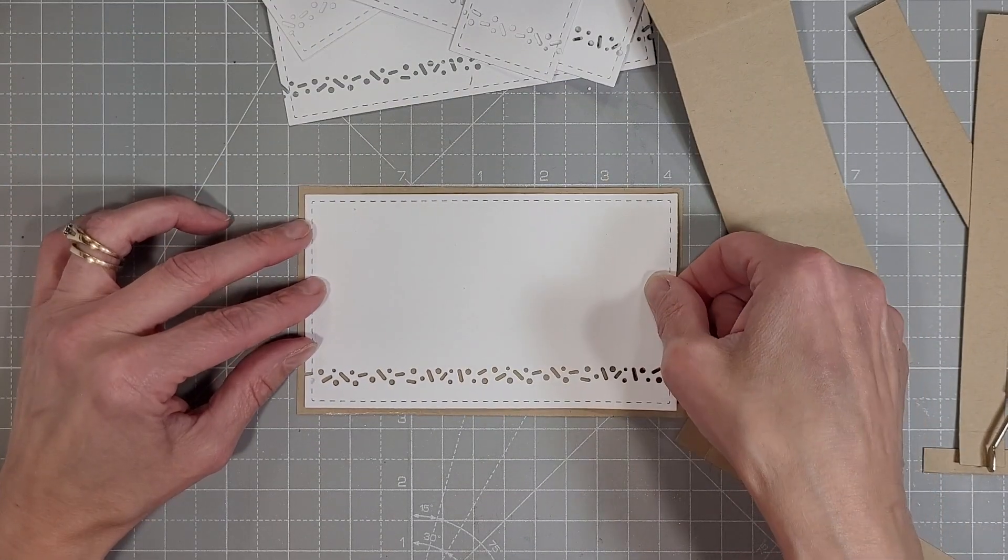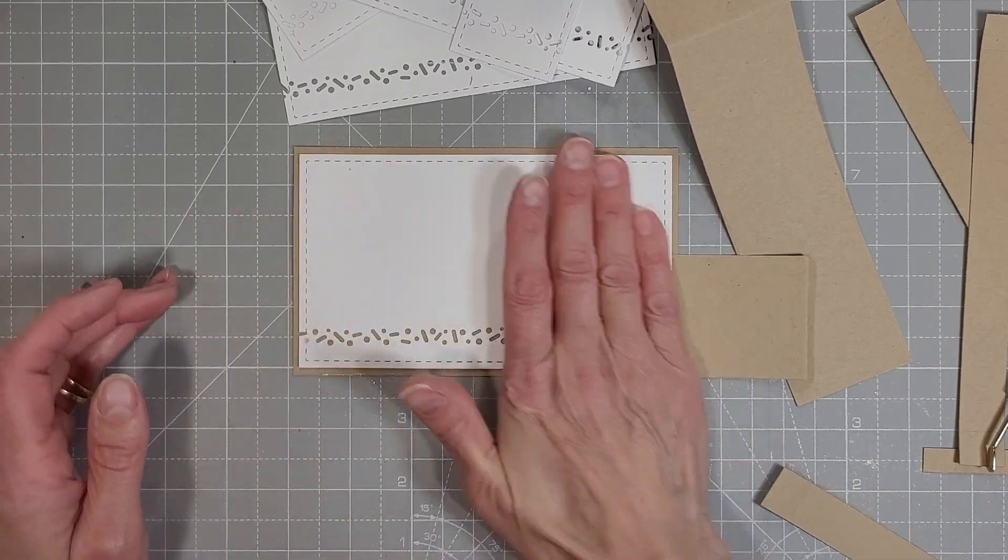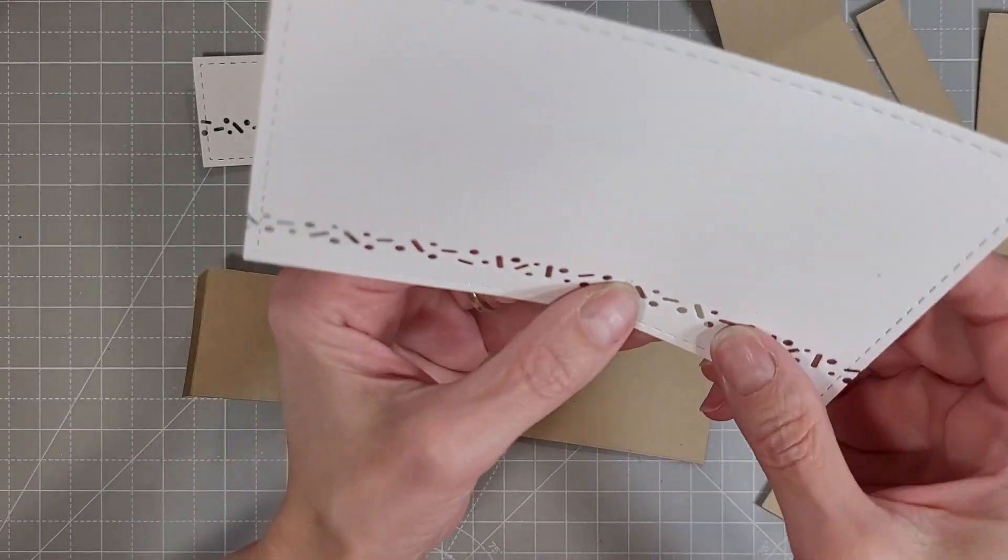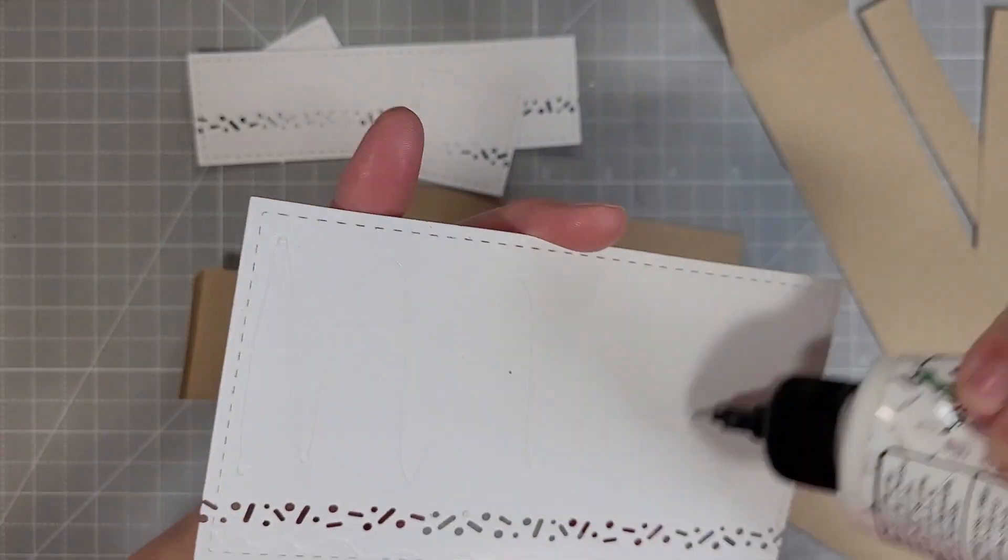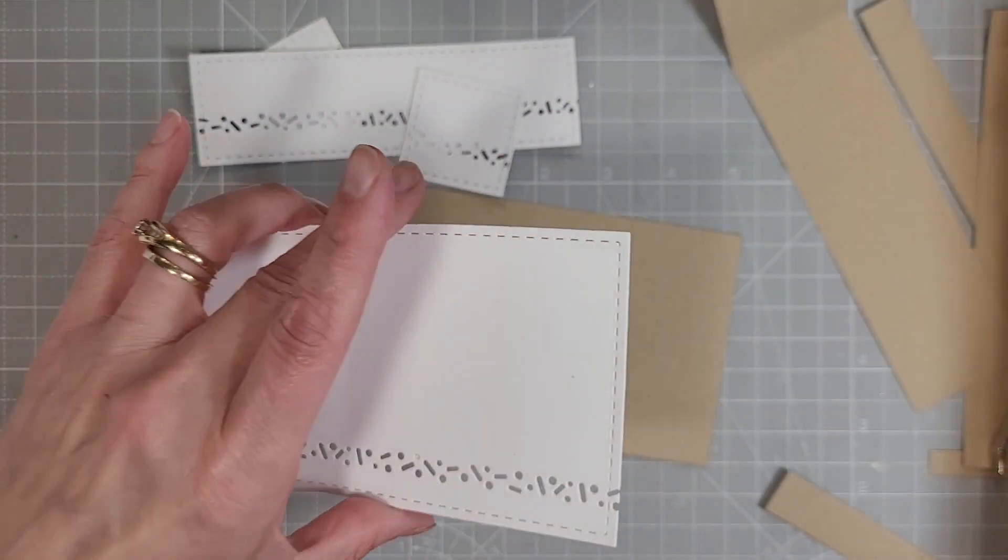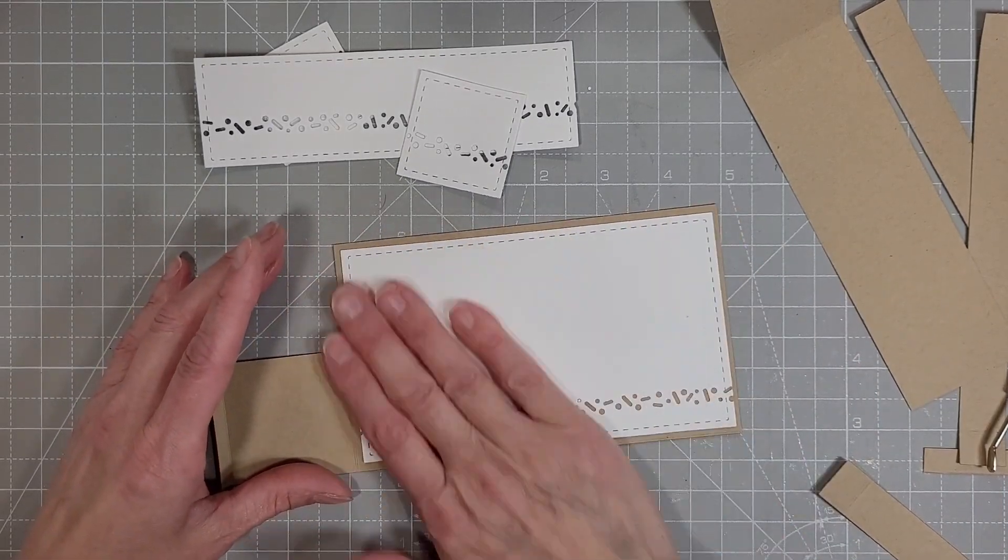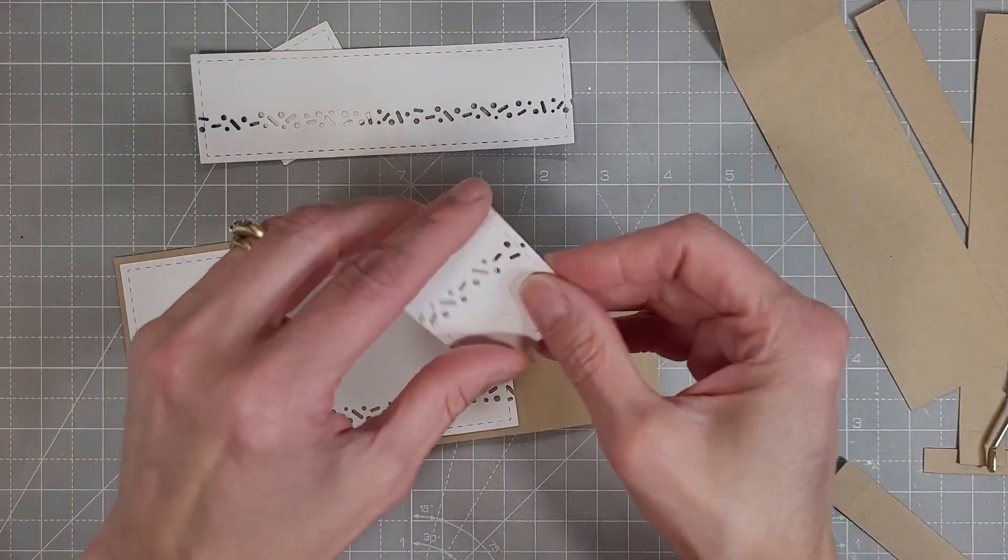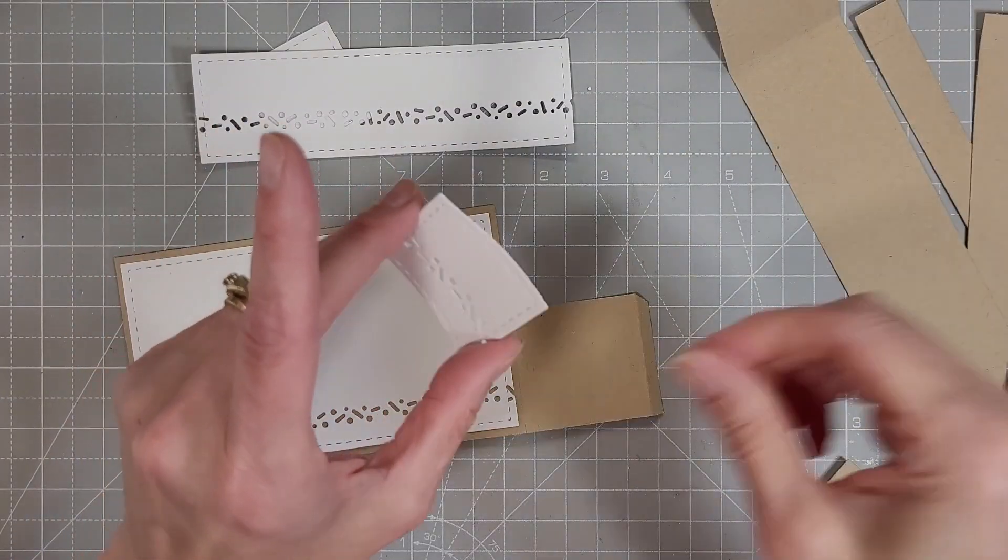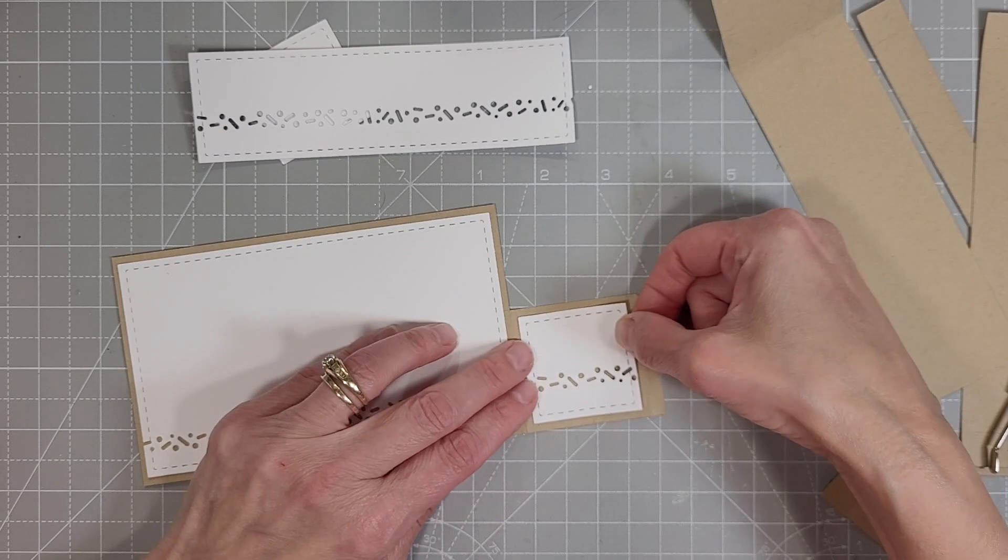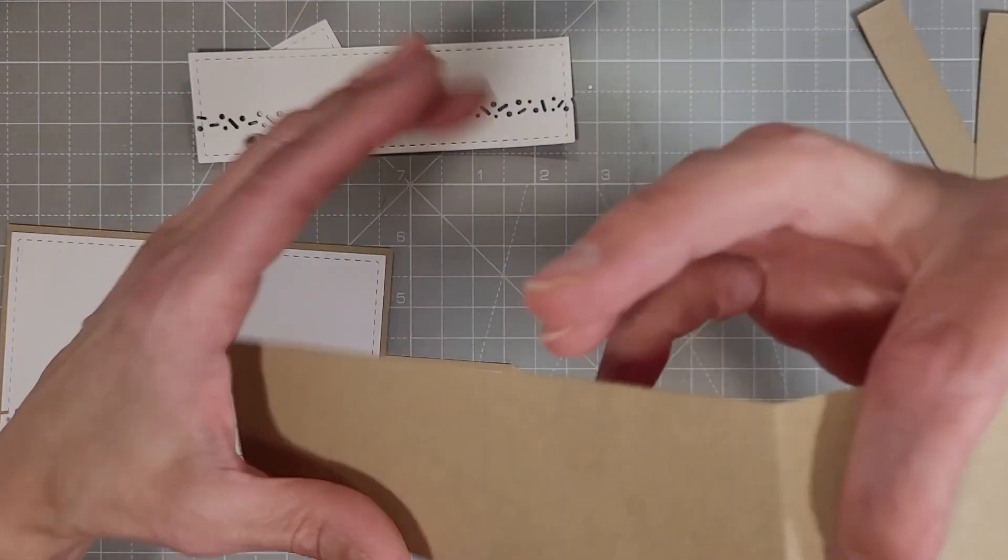We're going to adhere these for the decorative portion. So we're going to adhere one of these large panels on the front and one on the back, or one on the outside and one on the inside of the box however you want to think about that. Just going to quickly adhere those and then we will try to remember to put these on the right side.